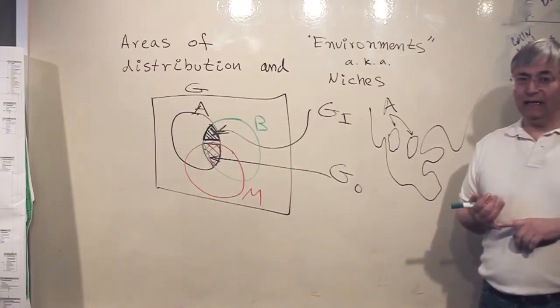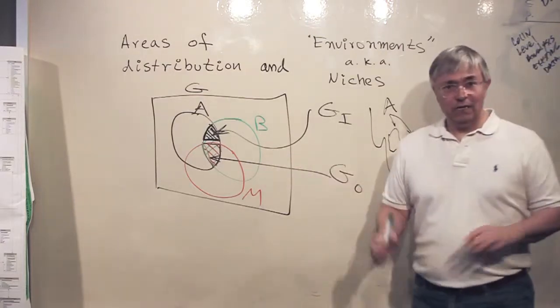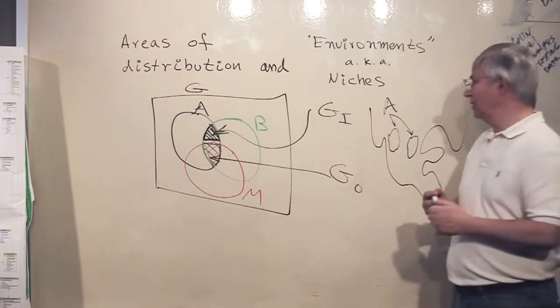So for a moment I'm going to be just hypothetical about the green circle. And I'm going to say that there is a competitor that prevents the species from occupying the area south of this circle.